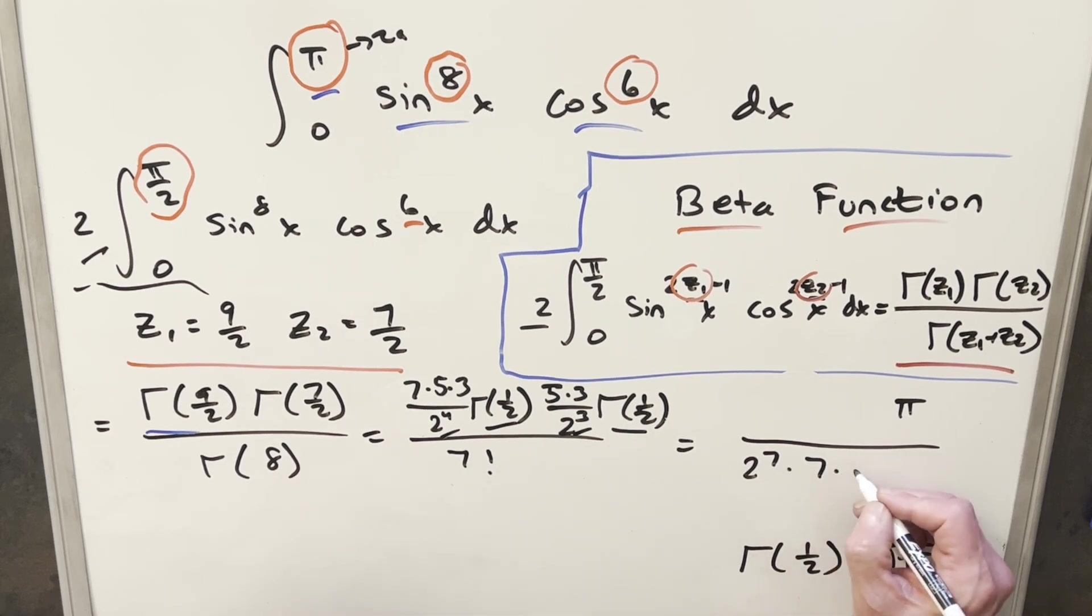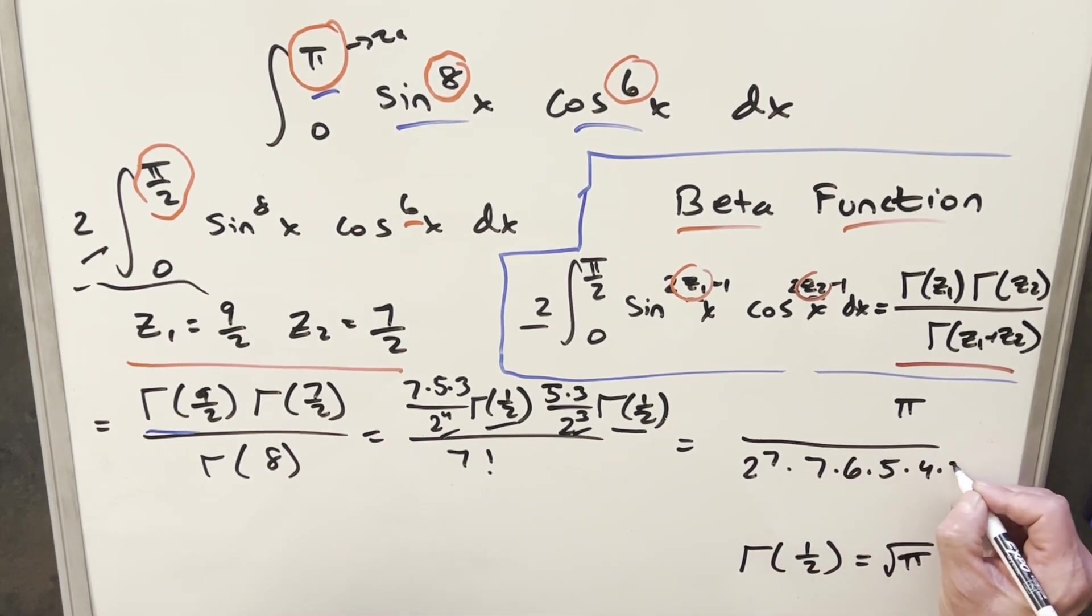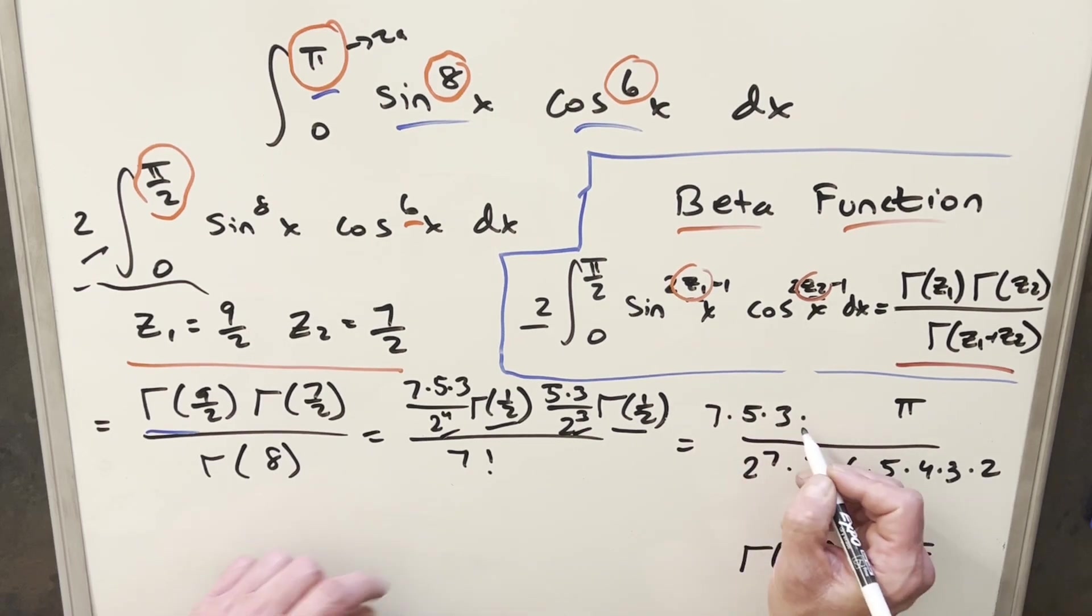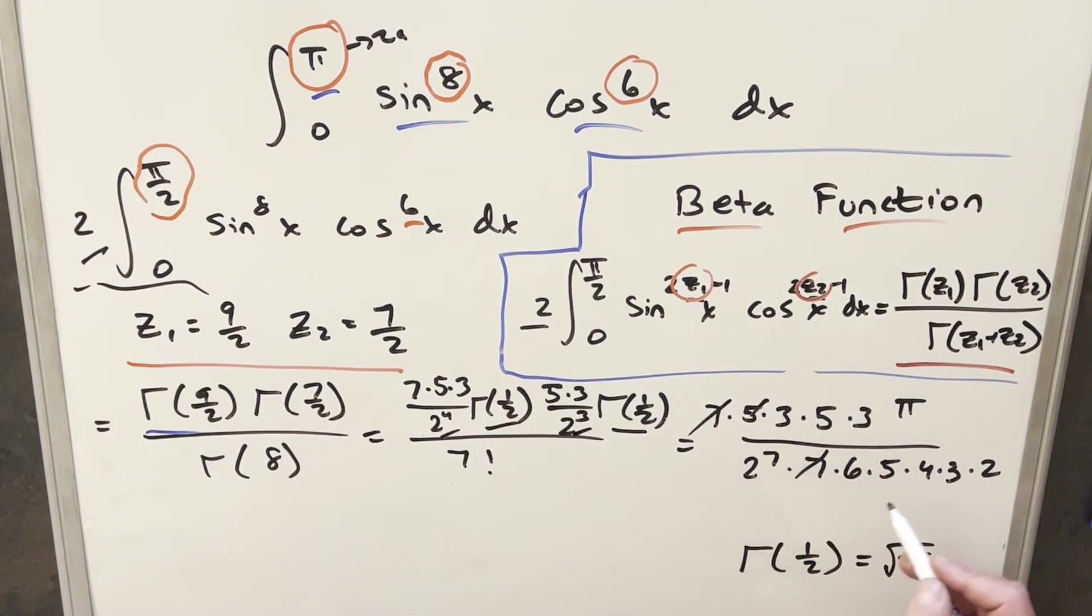And I'm actually going to write out this 7 factorial as 7 times 6 times 5, 4, 3, 2. I'm doing that so I can get some cancellation here. We have 7 times 5 times 3 times 5 times 3. That's going to allow me to cancel 7s here, 5s here, 3s here, and I'll cancel 3 with 6 to give me another 2 here. So just looking at what we have left, we're going to have 5 times pi. 2 to the 4th times 2 to the 7th gives me 2 to the 11th. But 2 to the 11th is 2048. So for my final solution, we just get 5 pi over 2048.